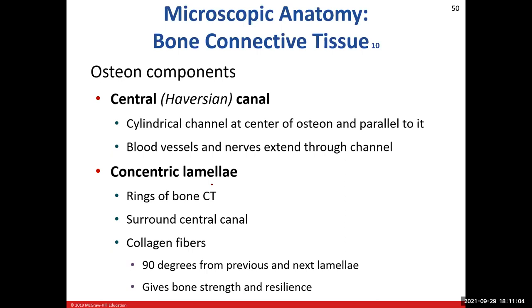The central canal is where we find our blood vessels — venules, arterioles — and our nerves. Bone is a highly vascularized and innervated tissue. Looking at the osteon, you'll notice rings circling around the central canal; the further from the canal, the bigger they get. These are the concentric lamellae.